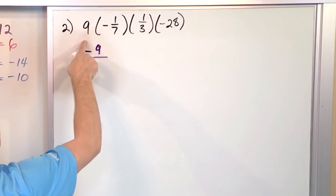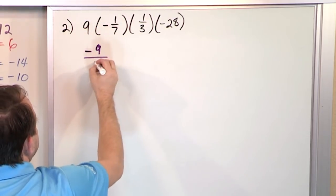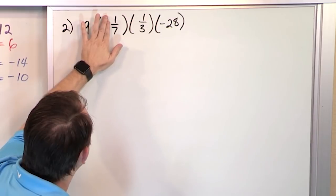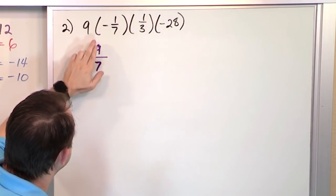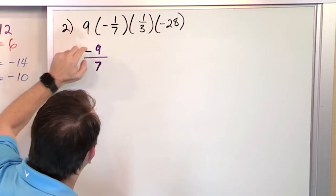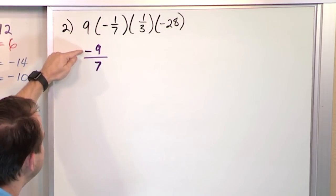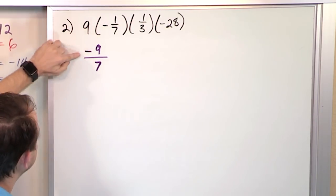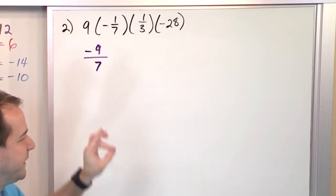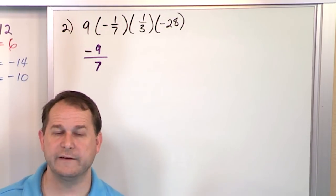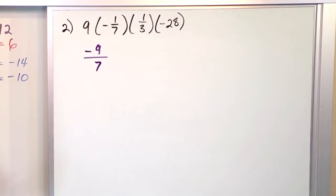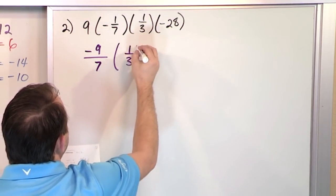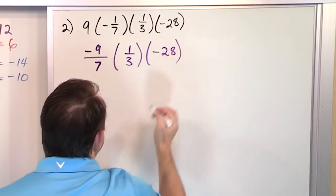Now we still have to multiply by 1/3. There's a couple ways to do the next multiplication. I notice I have a 3 and a 9 on the top and bottom of the fraction — 3 divided by 3 is 1, and 9 divided by 3 is 3. So now I have negative 3 times 1, which gives negative 3 on top. And on the bottom, 7 times 1 is 7. I still have to multiply by negative 28.